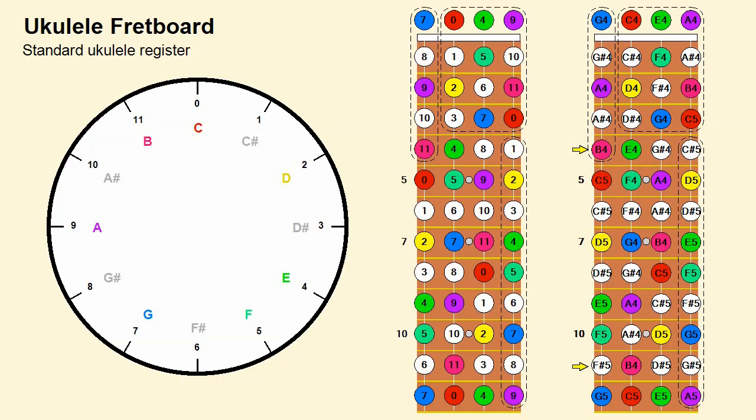For example, the note B4 is located on the fourth fret of the fourth string, above the note C5, but there is no position above the open C4 note on the third string. One has to go down seven frets on the third string to place it on its eleventh fret.